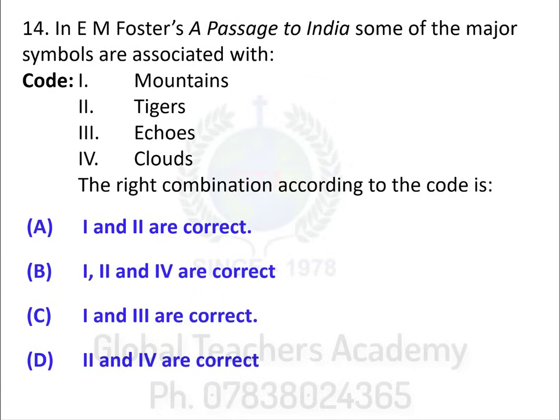In E.M. Forster's A Passage to India, some of the major symbols are associated with: 1 — mountain, 2 — tiger, 3 — echoes, 4 — clouds. Combinations: A — 1 and 2, B — 1, 2 and 4, C — 1 and 3, D — 2 and 4. A 1924 text by E.M. Forster, set against the backdrop of British Raj and the Indian independence movement in the 1920s, exploring cultural differences between colonial India and England.